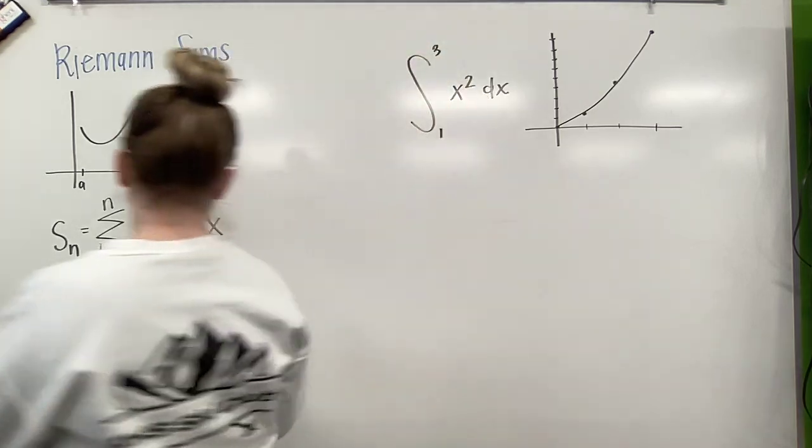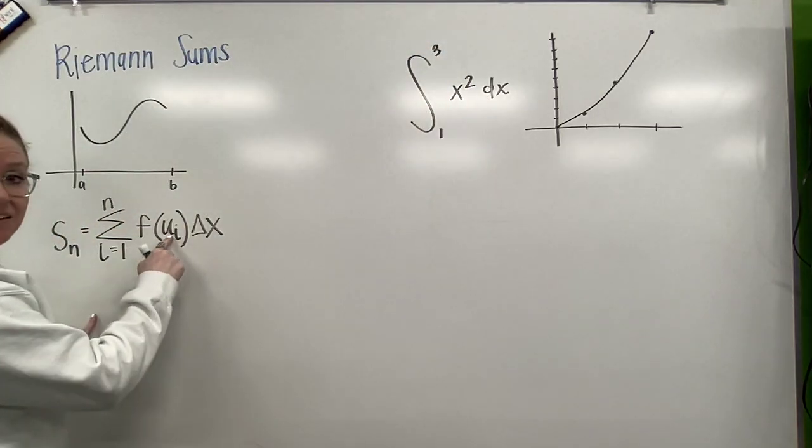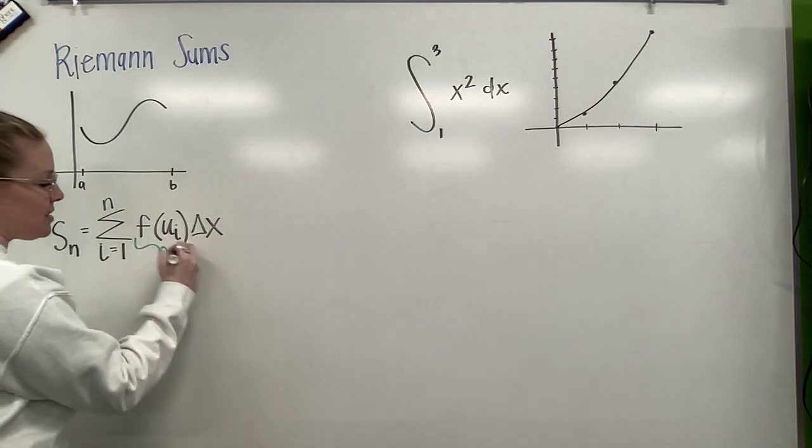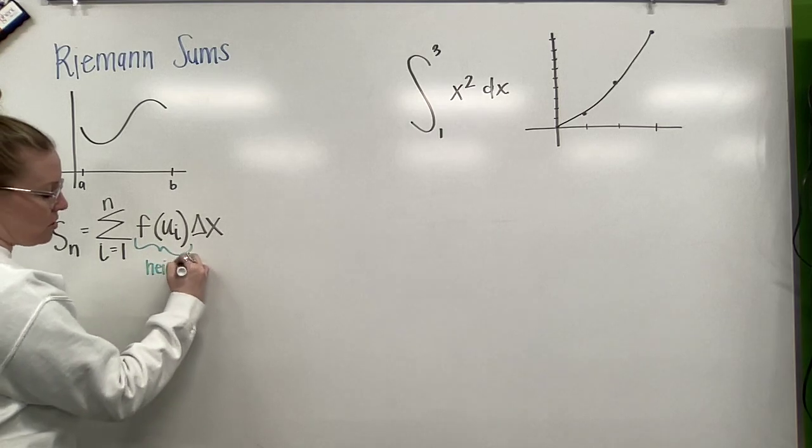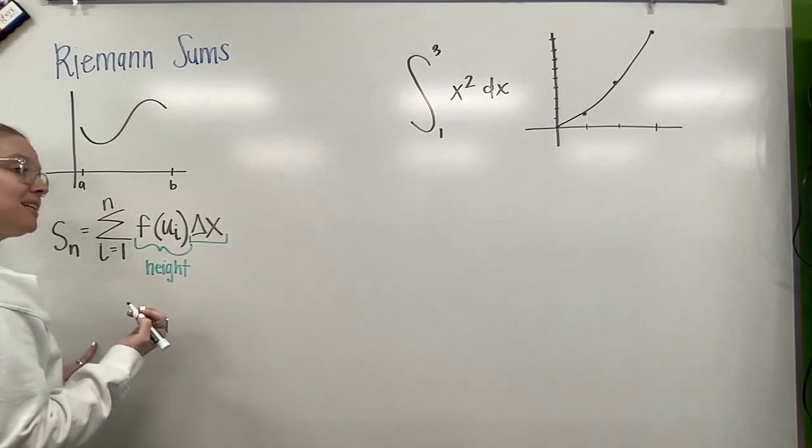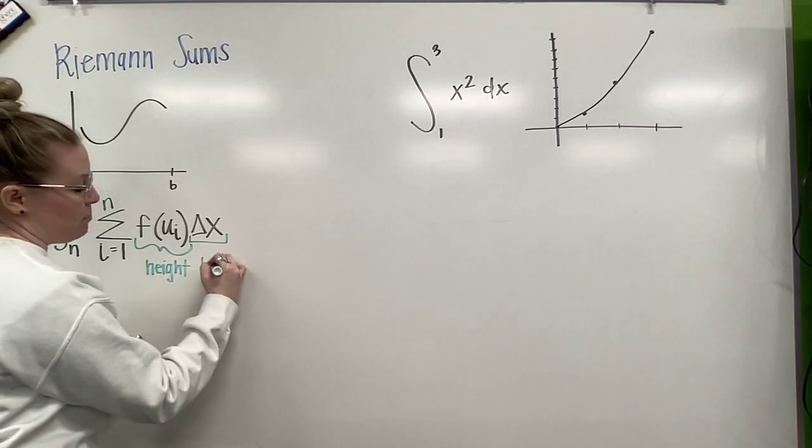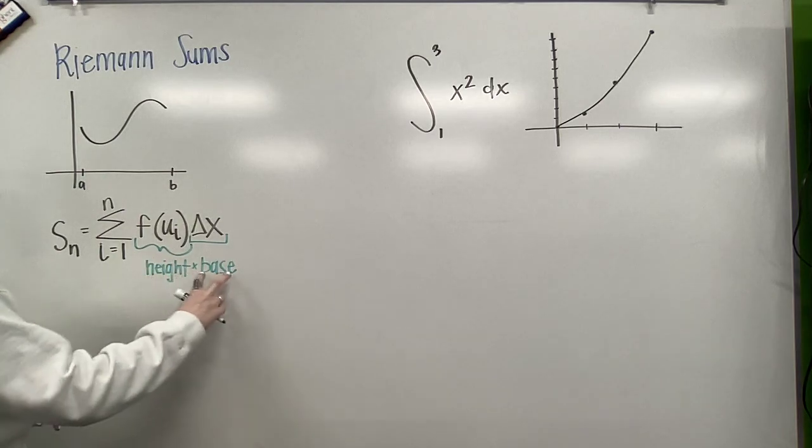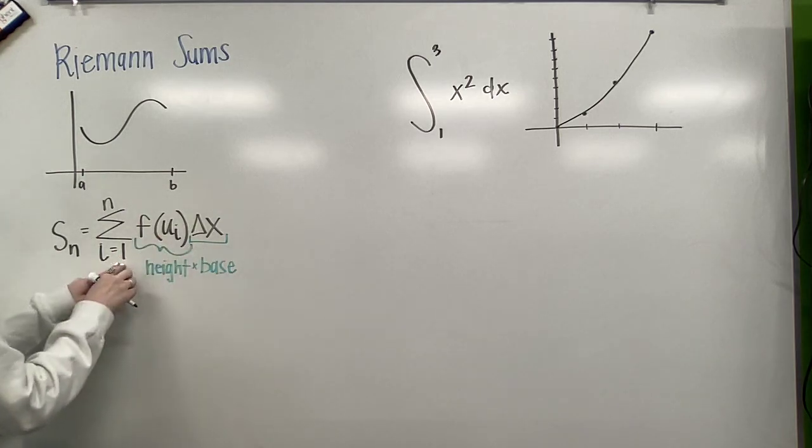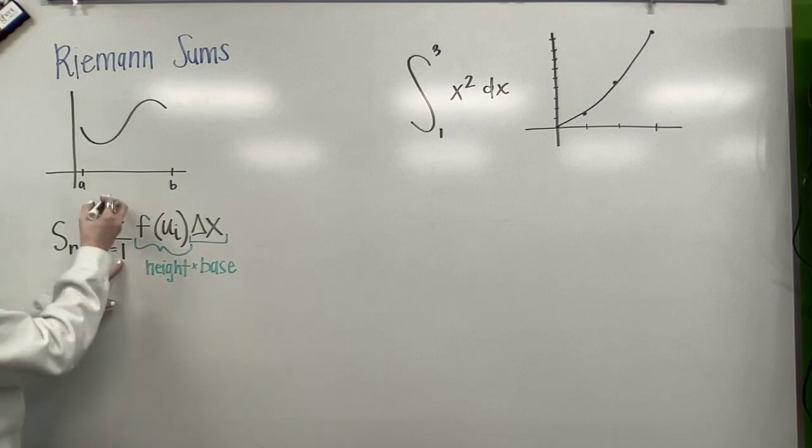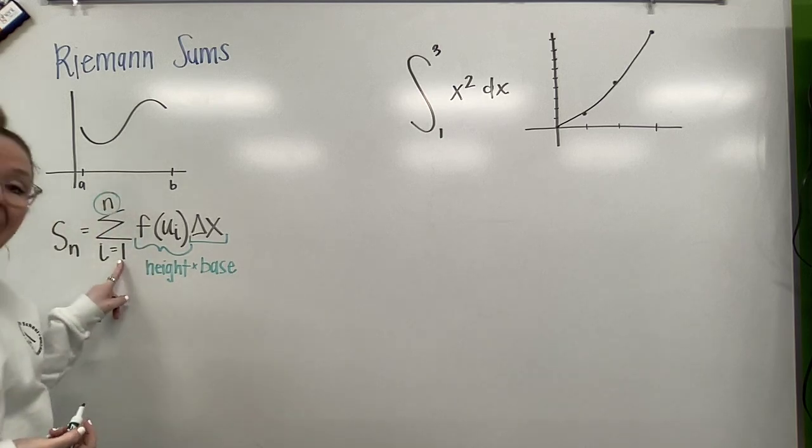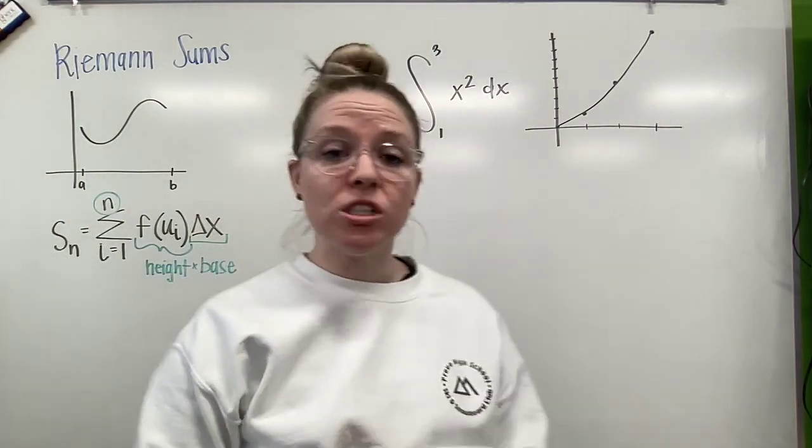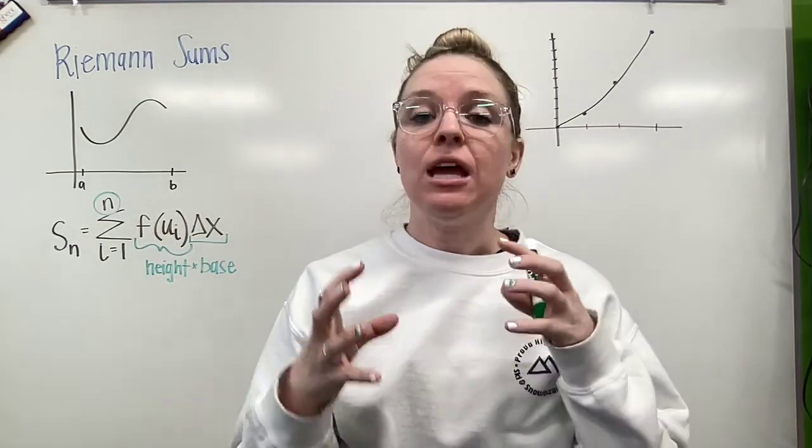And what this is doing, this is our function at any given value. So these are our x values. This is the height of each of our rectangles. And then this delta x, that's our change in x, that's the base of our rectangles. And we're multiplying those together. So height times base, that's one rectangle. And we're starting from our first x value to our nth value. We're going to add those together and that's creating the area under the curve.